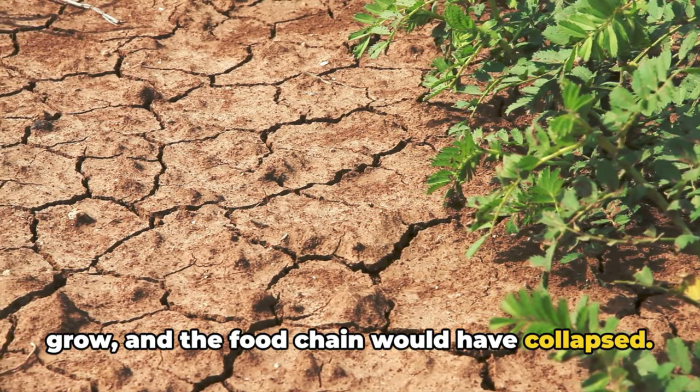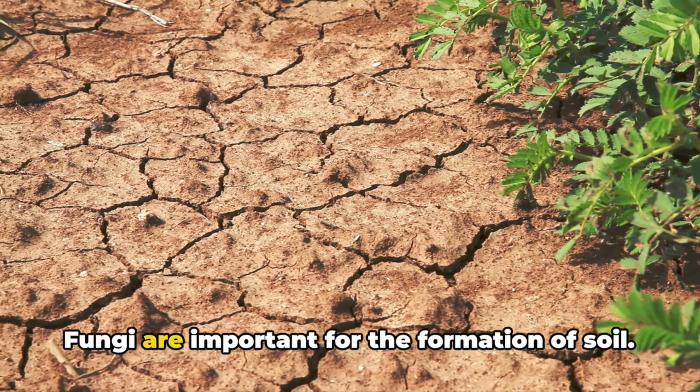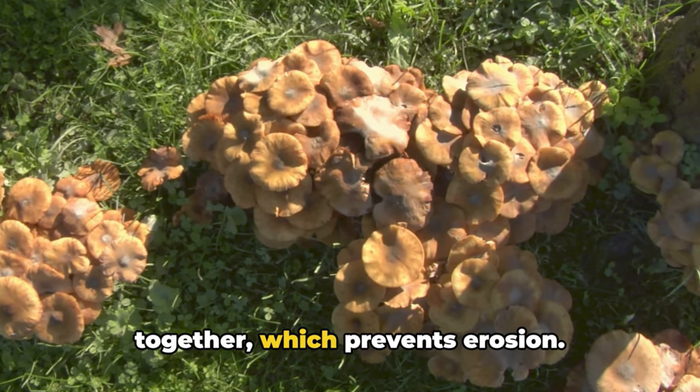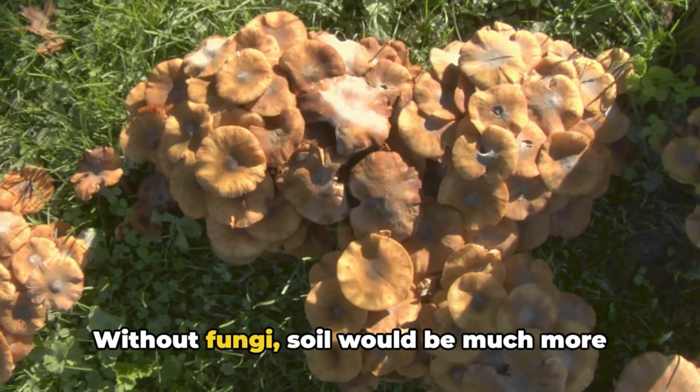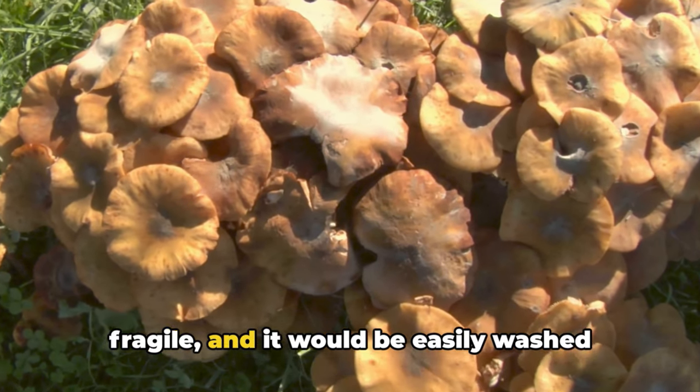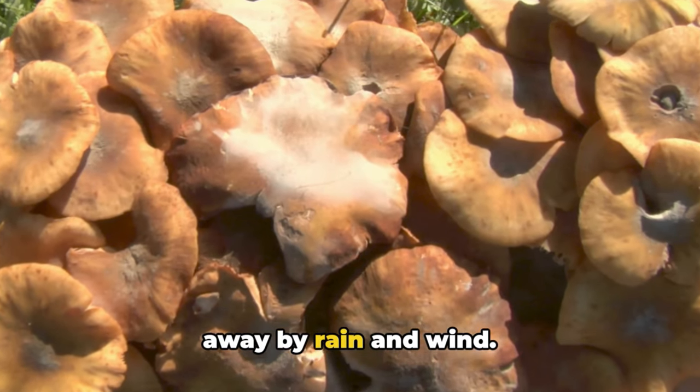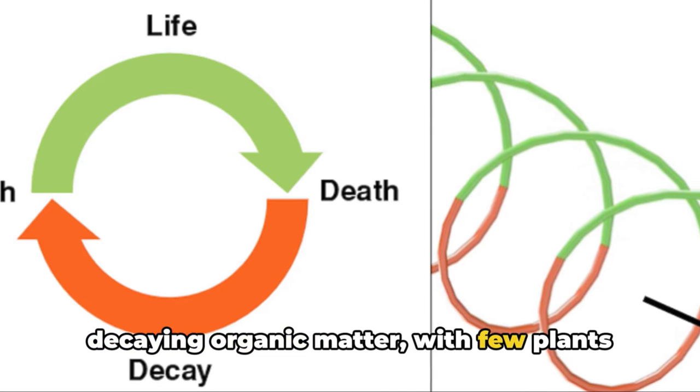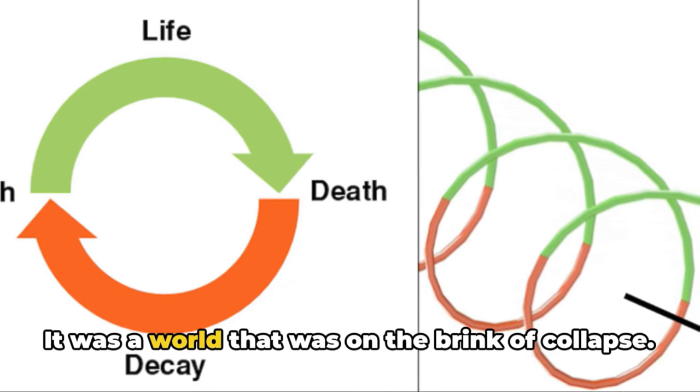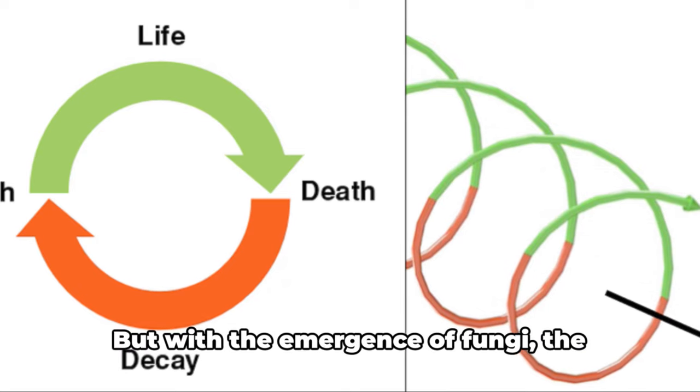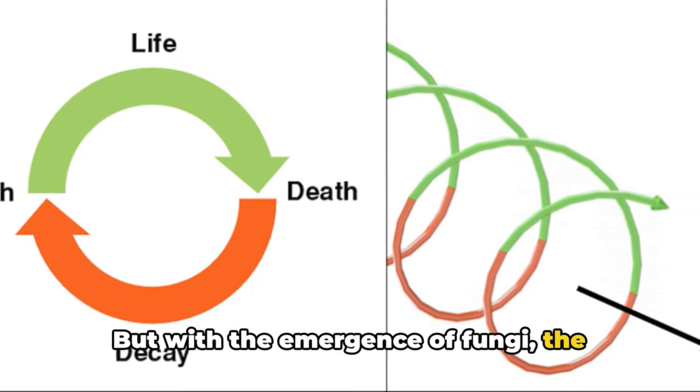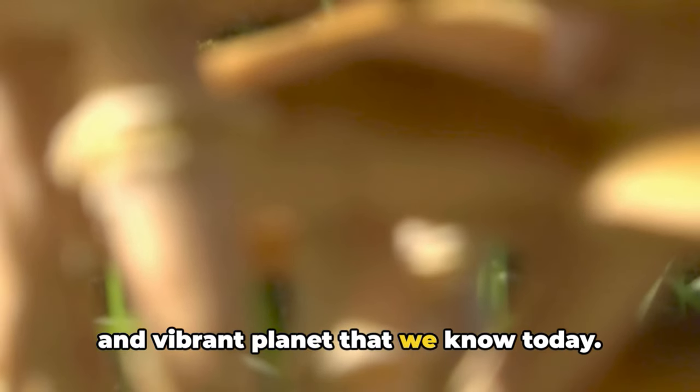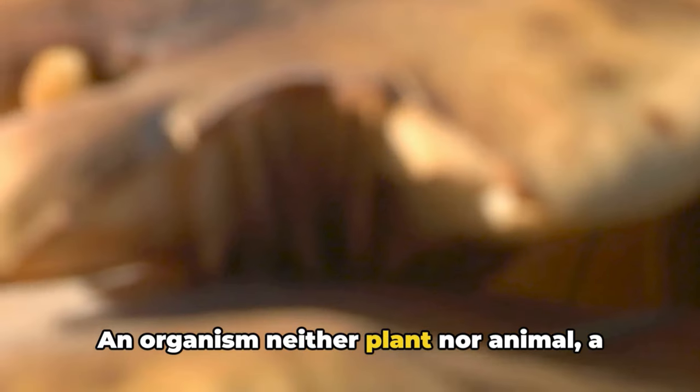Without fungi, plants would not have been able to get the nutrients they need to grow, and the food chain would have collapsed. Fungi are important for the formation of soil. They help to bind soil particles together, which prevents erosion. Without fungi, soil would be much more fragile and would be easily washed away by rain and wind. The Earth before fungi was a world of decaying organic matter with few plants and animals. It was a world that was on the brink of collapse. But with the emergence of fungi, the Earth was able to transform into the lush and vibrant planet that we know today.